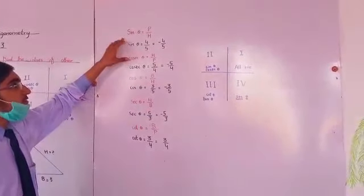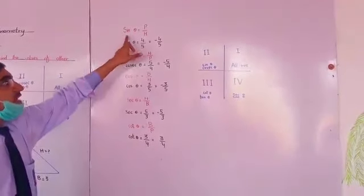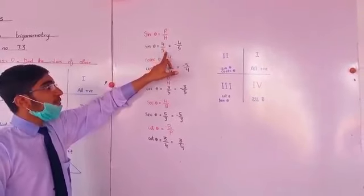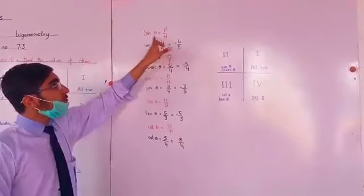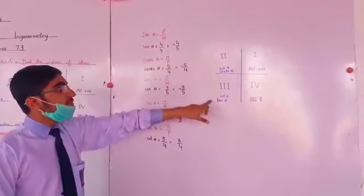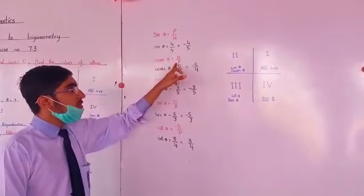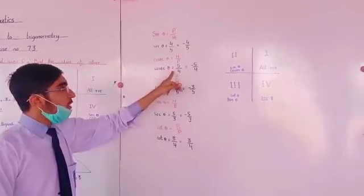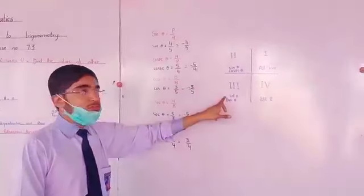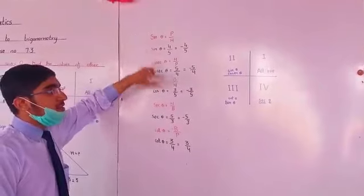By using these three values, we will find sin theta, cosec theta, sec theta, and cot theta. Firstly, sin theta is equal to perpendicular over hypotenuse, which is 4 over 5. Since it lies in the third quadrant, sin theta is negative, so we write a negative sign. Now cosec theta is equal to hypotenuse over perpendicular, which is 5 over 4. Cosec theta is also negative in the third quadrant. Note that sin theta and cosec theta are inverses of each other.